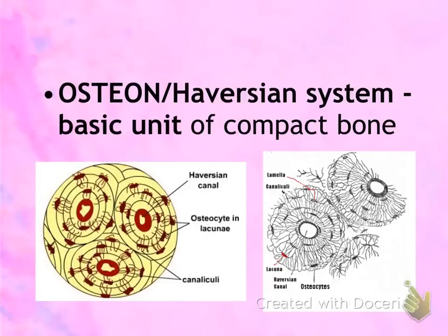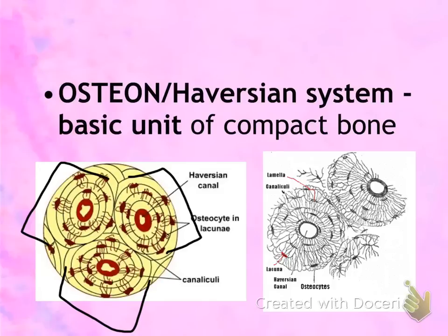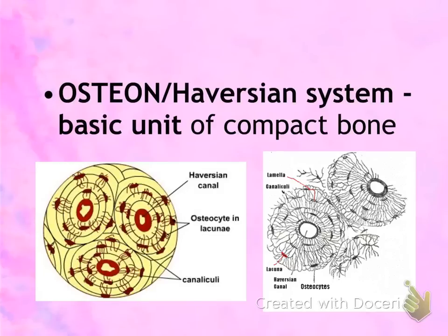There are some structures you need to be able to identify. The first one is the osteon, or the Haversian system. An osteon is basically one of these large rings — each one of these rings is an osteon. The little dark structures all along these little rings are your osteocytes inside the lacunae.